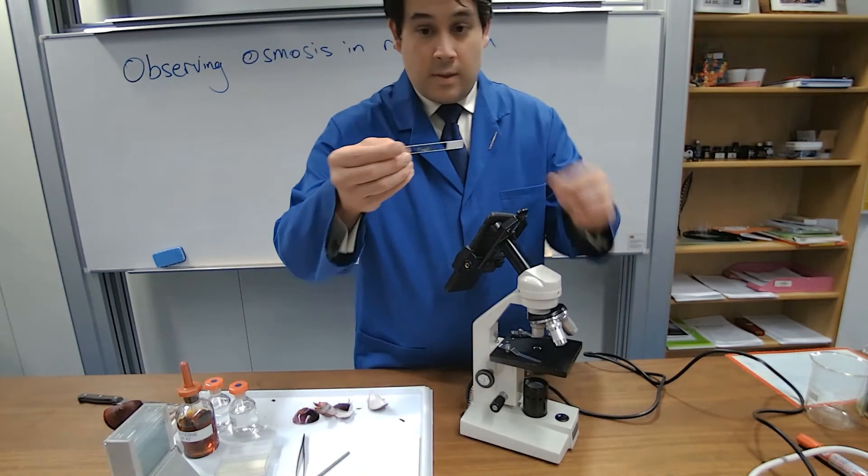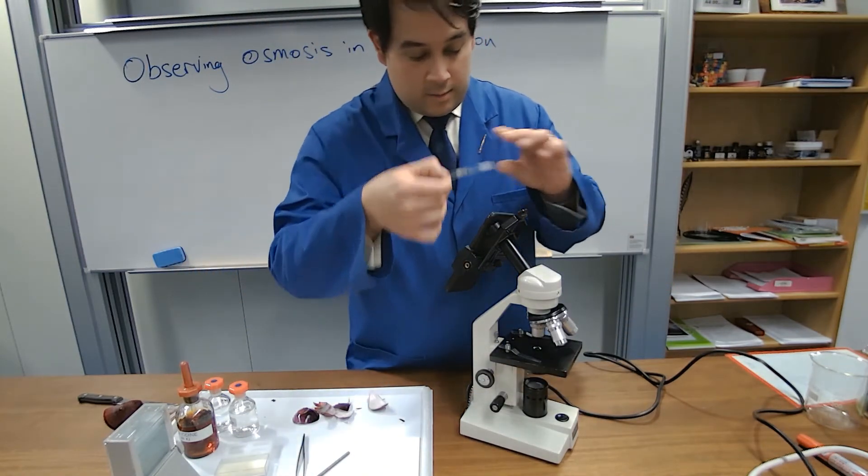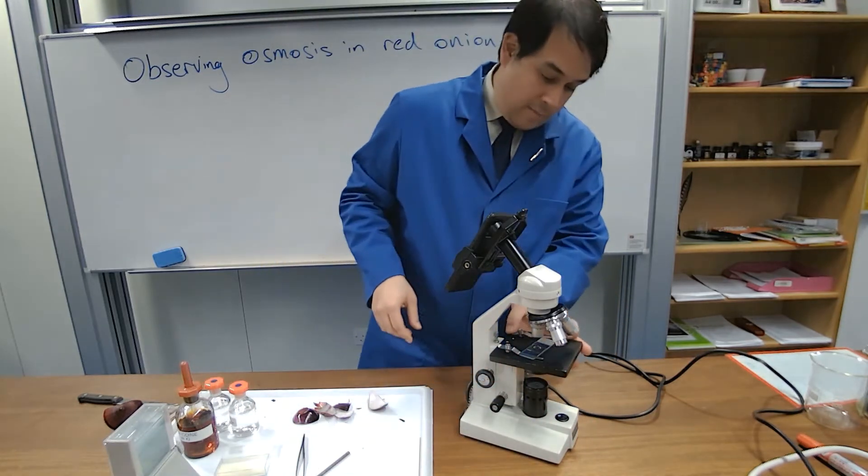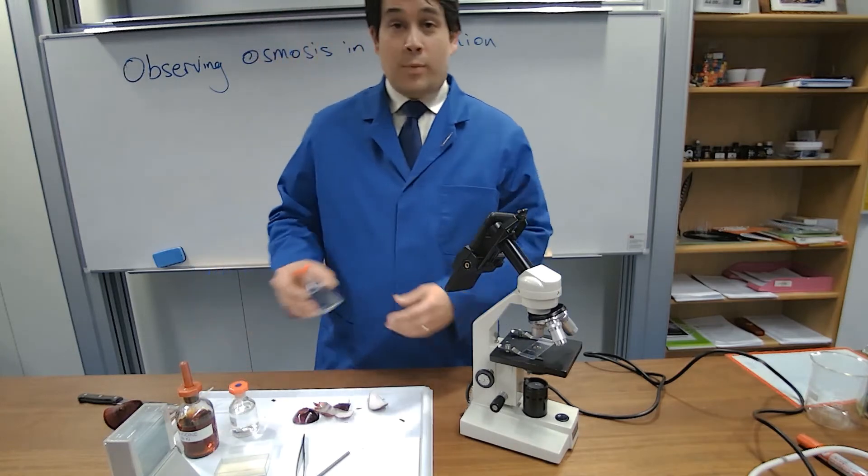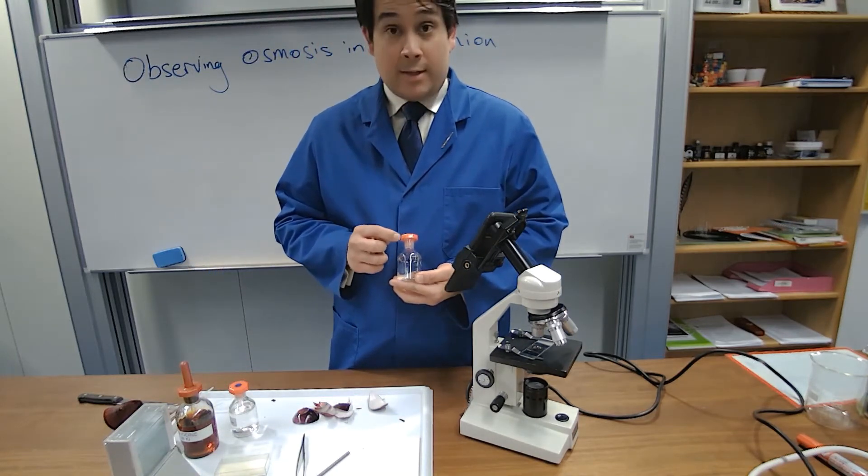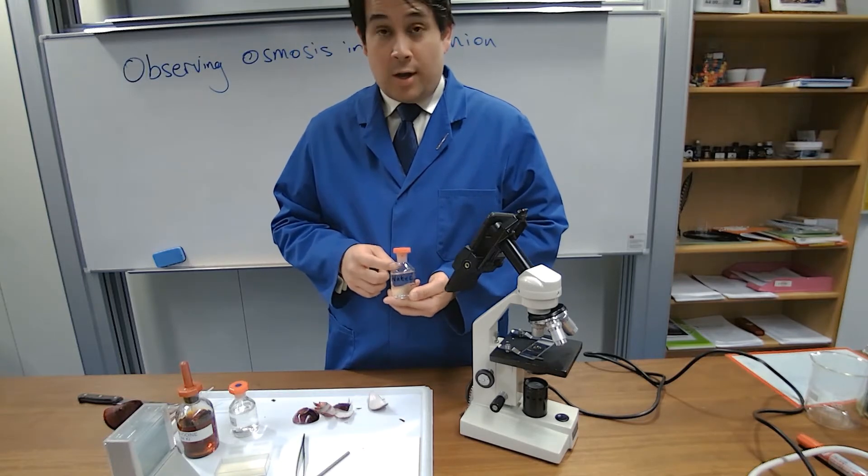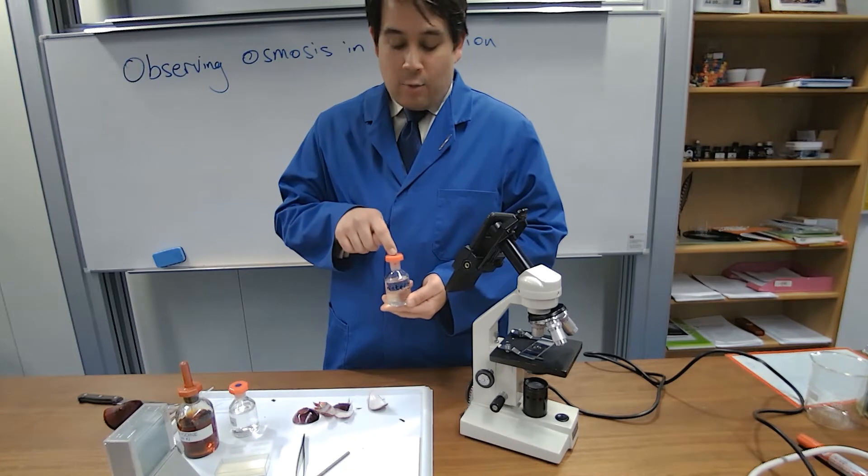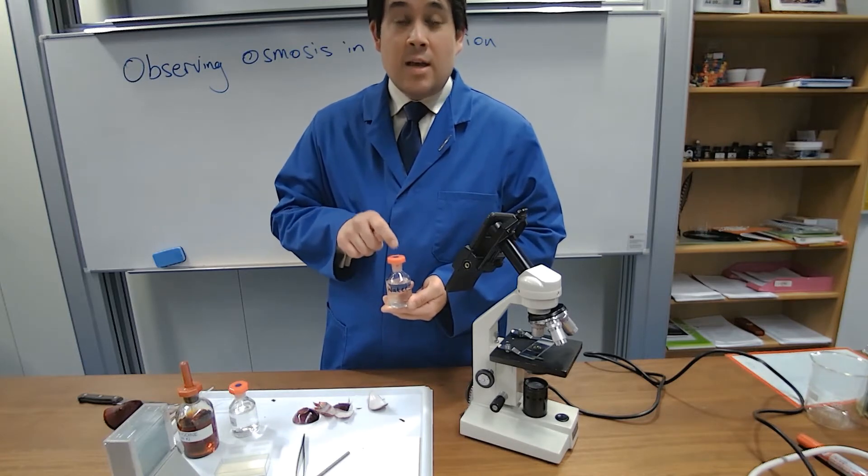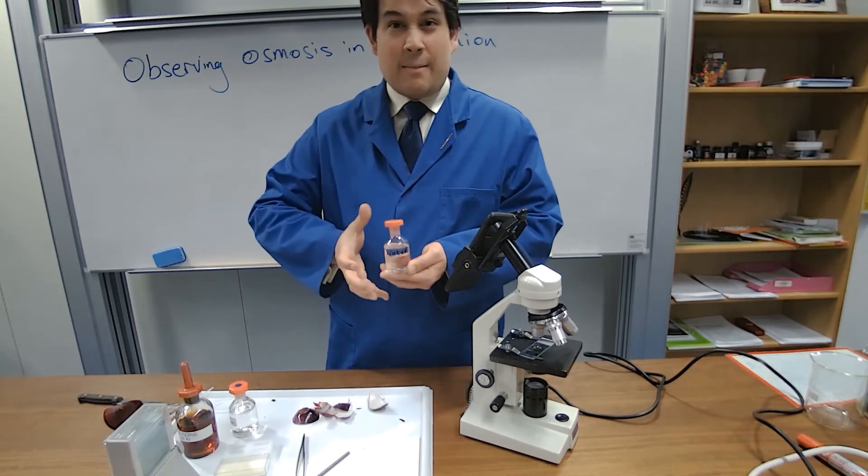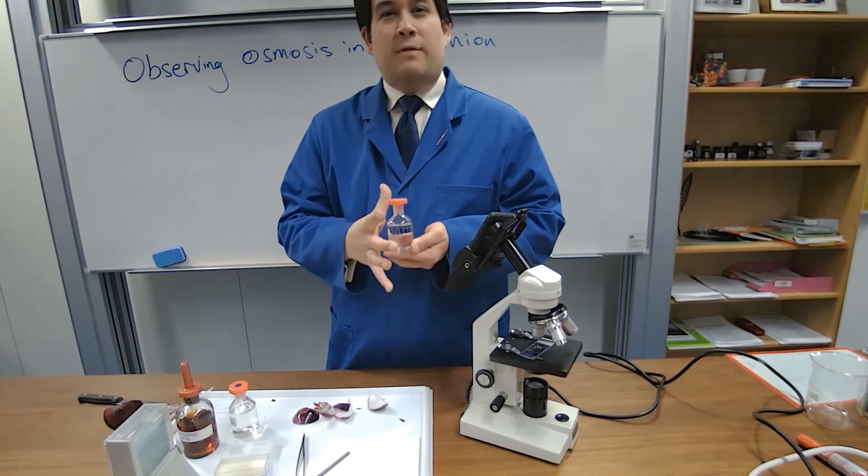We're going to put this prepared onion specimen onto the light microscope and then find a bit of the red region. Then we're going to add a bit of distilled water. Now remember, distilled water is hypotonic, therefore it has a very high water potential. If it has a high water potential, by osmosis it should move into the red onion cells, making them fully turgent. So the cell membrane should be full.